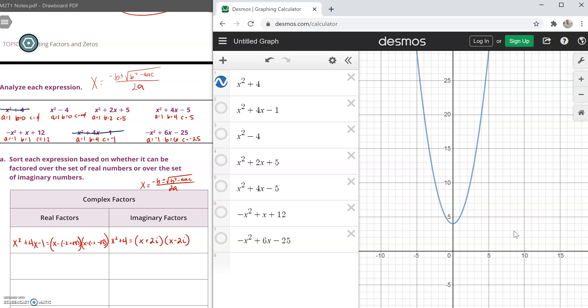And notice that we had imaginary factors and our graph does not cross the x-axis. So that means our solutions are up in the air. There's no concrete solution, meaning there's no place in time that our graph crosses the x-axis.